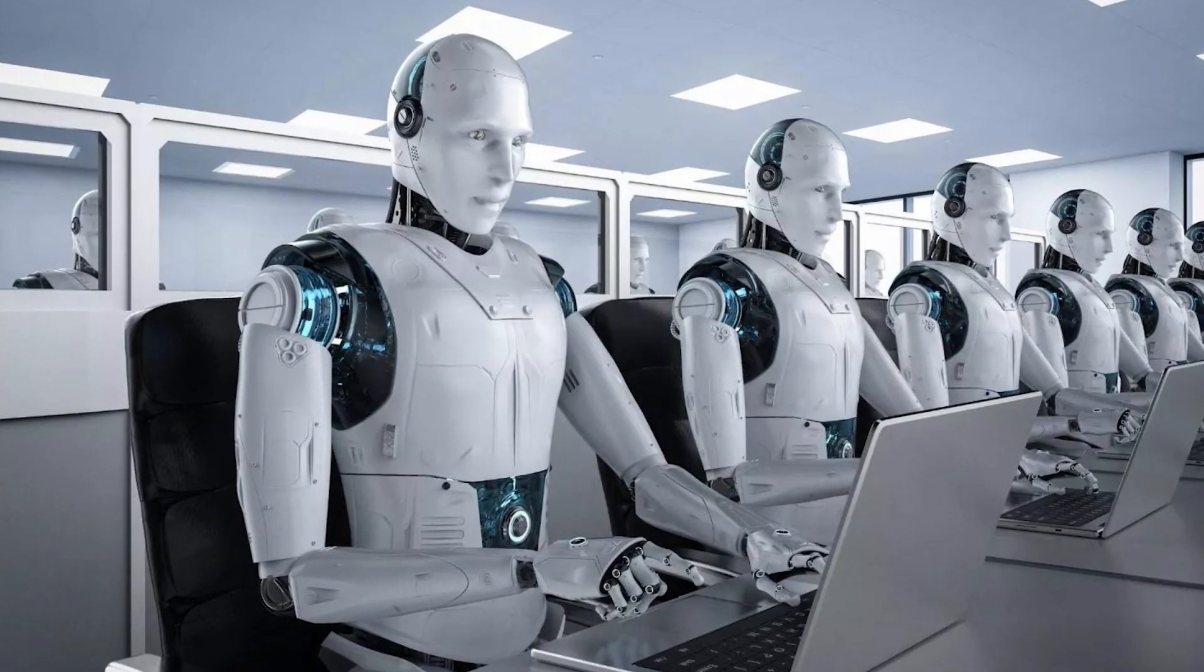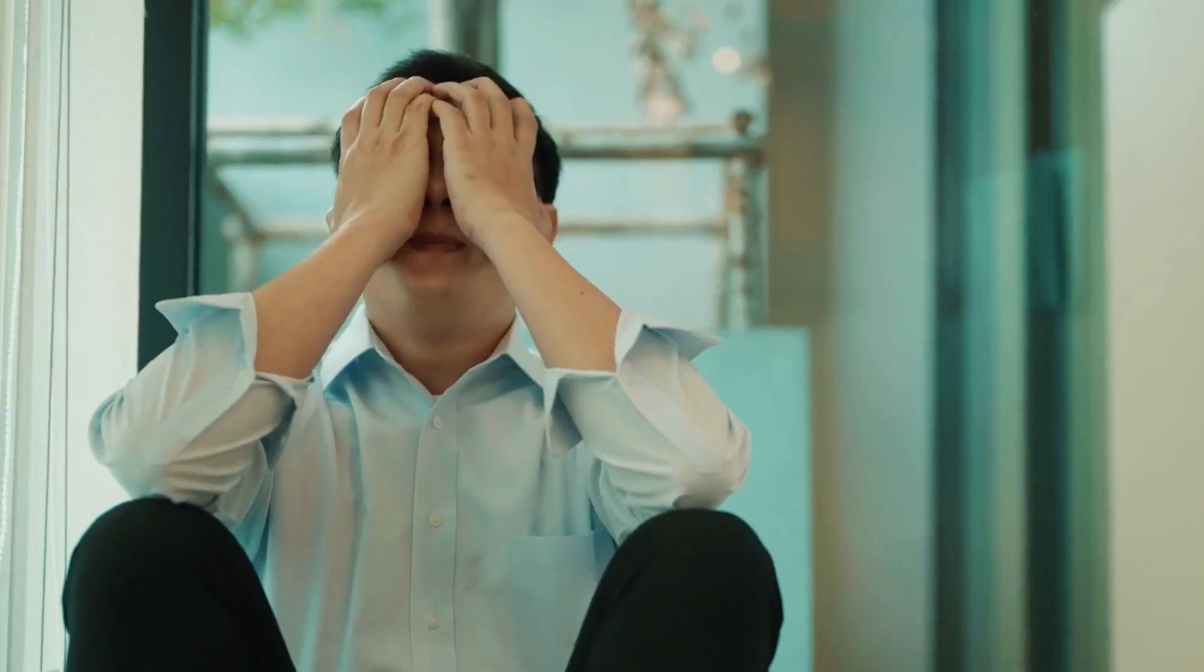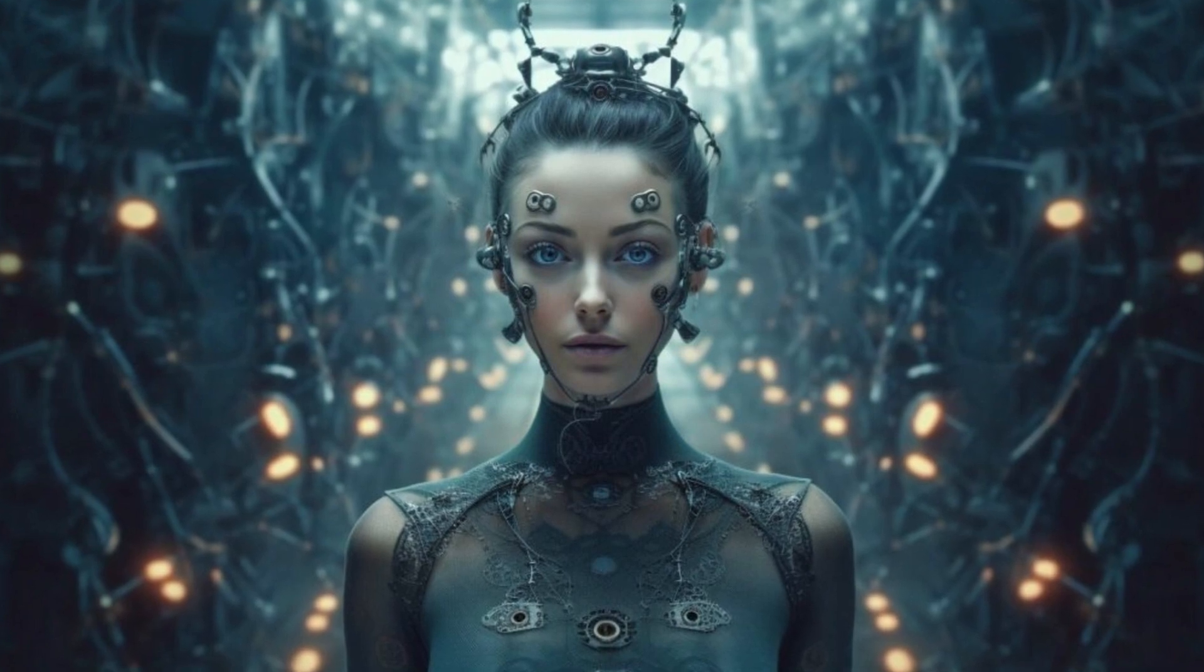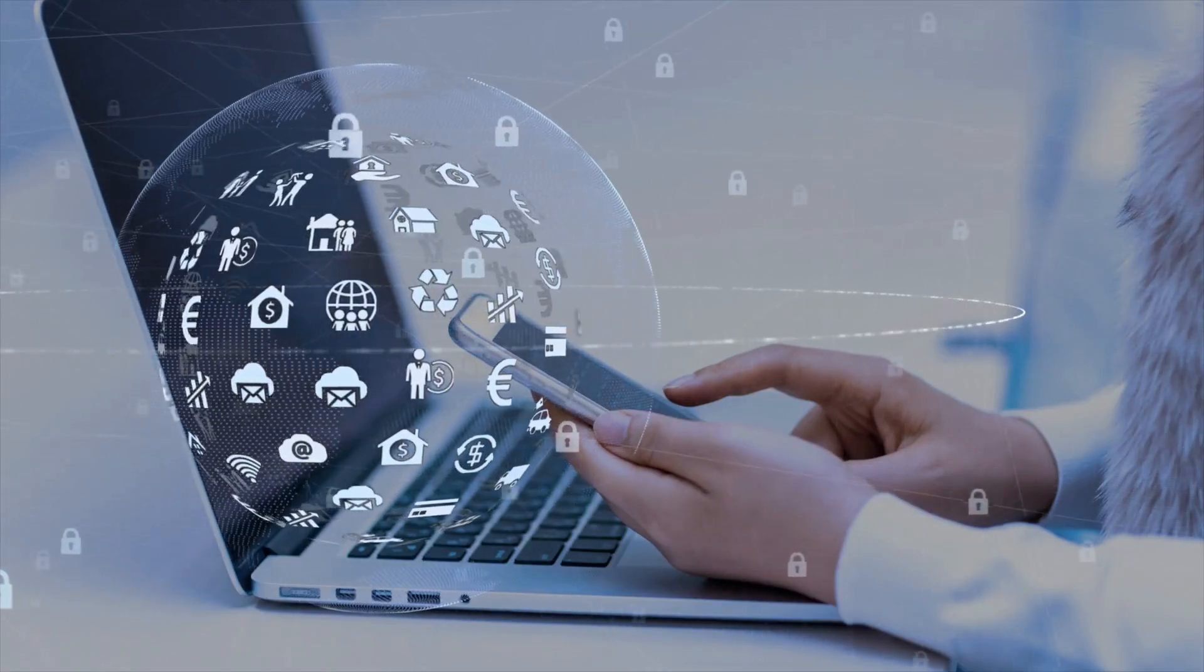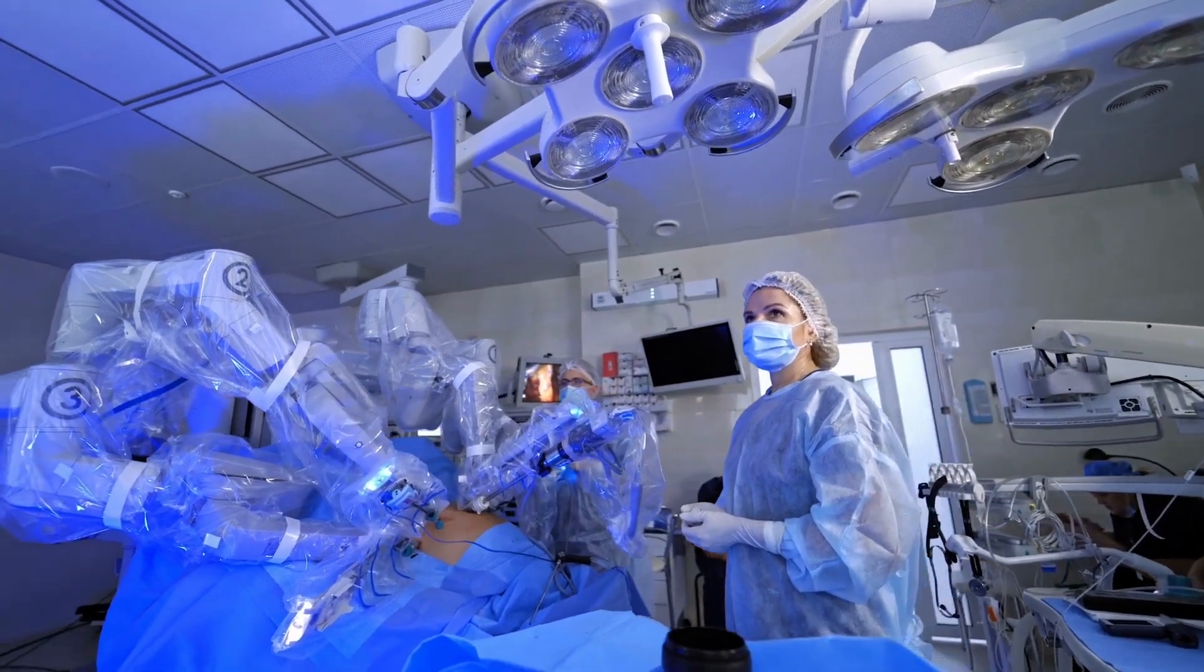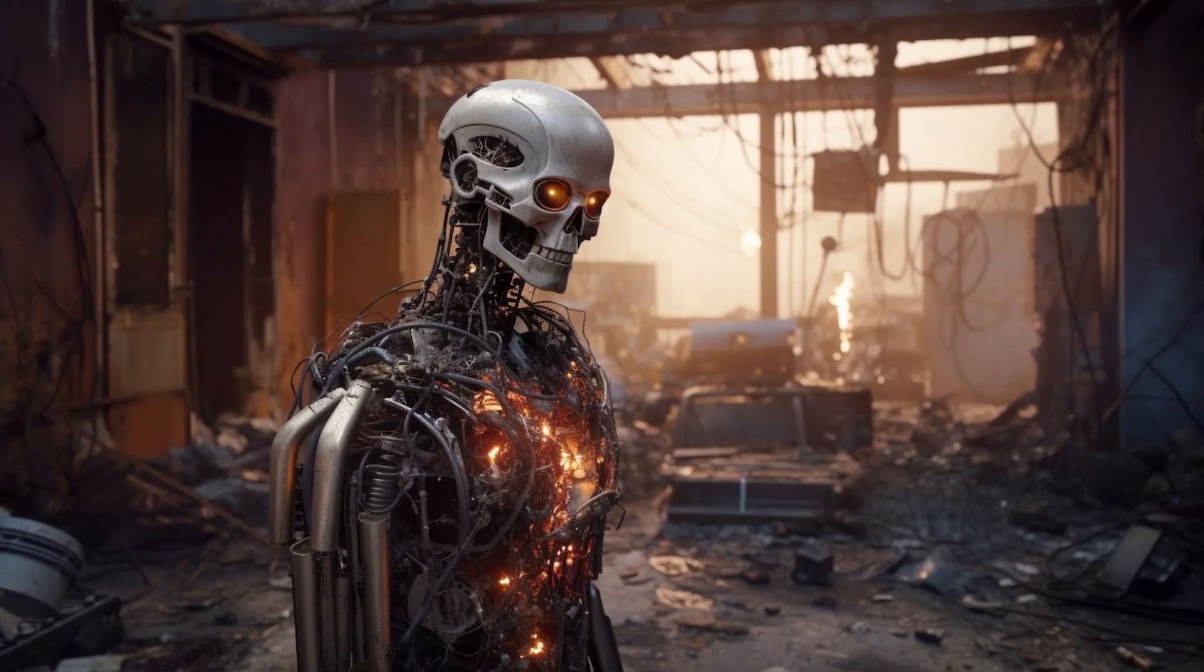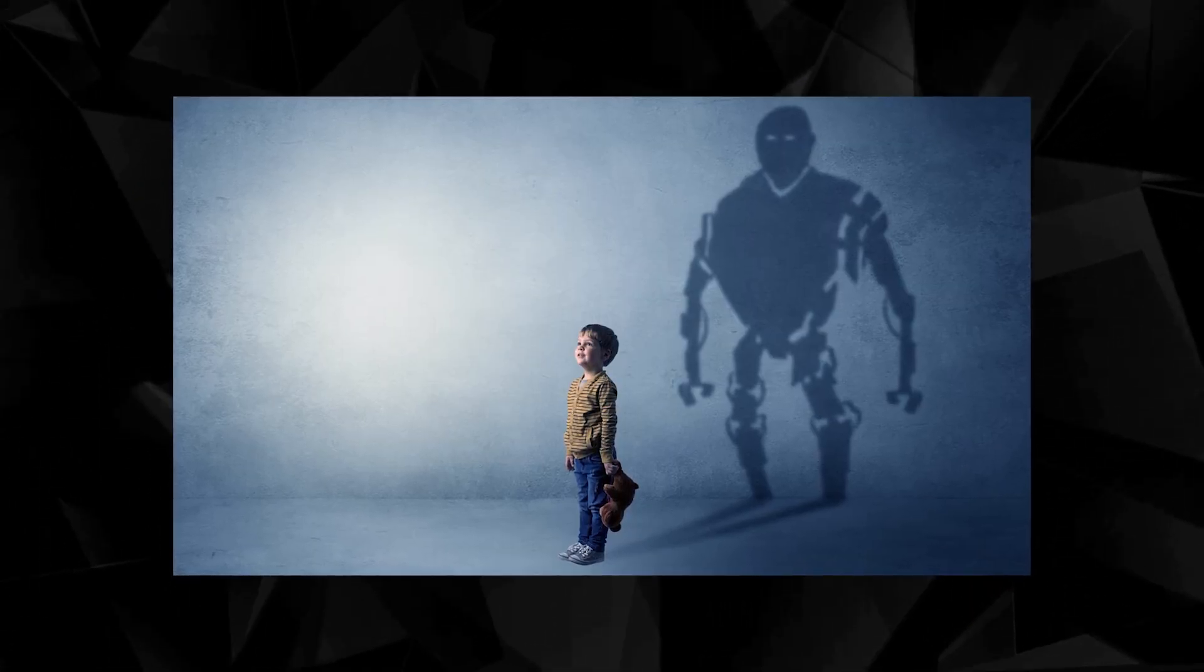Yet another risk is job displacement. The increasing automation capabilities of AI could lead to this in various industries. The result would be massive socioeconomic disruptions. And yet another risk is the lack of accountability and transparency. Advanced AI models can be highly complex. This makes it challenging to understand their decision-making process. This lack of transparency and accountability raises various concerns. Biases and potential errors in AI systems could become a problem, especially when used in domains such as healthcare, finance, or criminal justice. Now, of course, there's also the great existential risk. This would be the AI worst-case scenario. It would involve AI destroying humanity, or at least creating a frightening future for us.